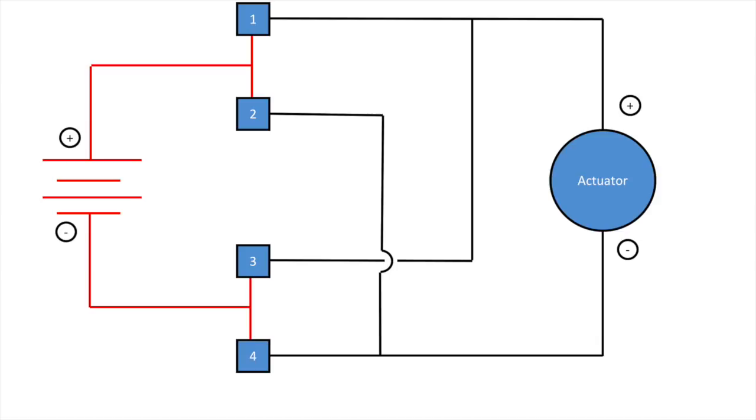On the left we have a battery, and on the right we have the actuator. We can program the Arduino to open switches 1 and 4 if we want the actuator to retract, and open 2 and 3 if we want it to extend.